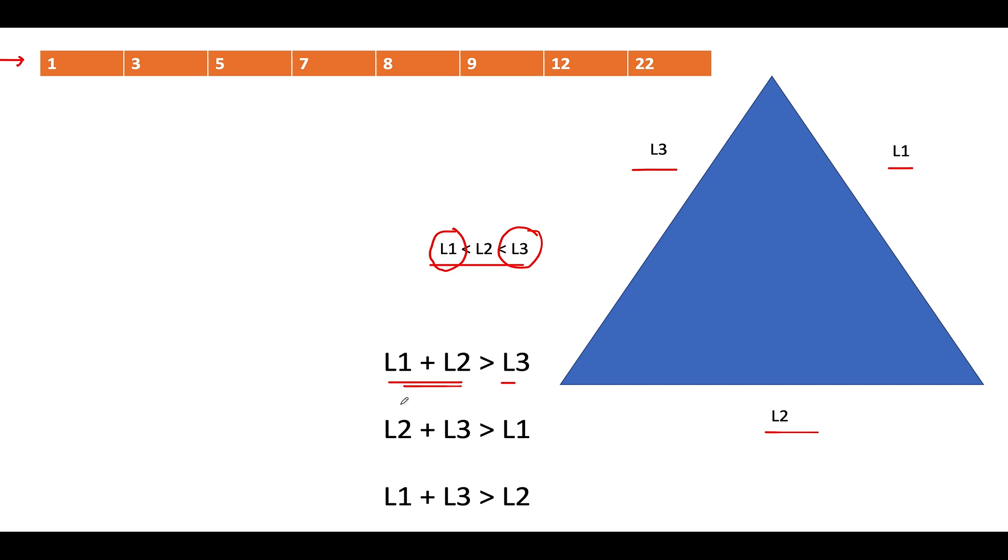Also, the rest of the two equations wherein L2 plus L3 is greater than L1 - these will automatically be true by virtue of L3 being the largest, L1 being the smallest, and L2 being the middle one. Similarly, if this condition is met, we don't need to check the rest of the two conditions. Pretty simple and straightforward.